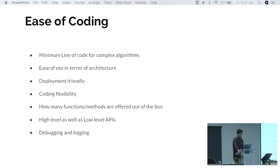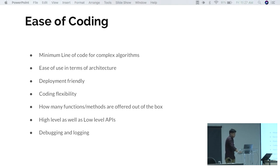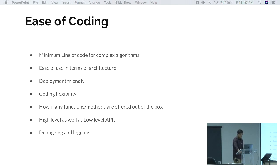Debugging and logging is very important for production-ready software. You always try to track your model's improvement and how your software is behaving over time. Since many algorithms are not fully understood internally — there is much research on how neural networks work — you need a good debugging system so that if something goes wrong later, you can identify where the problem occurred.